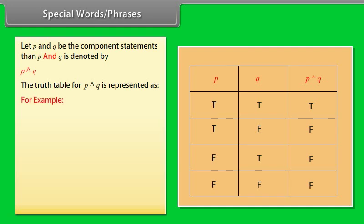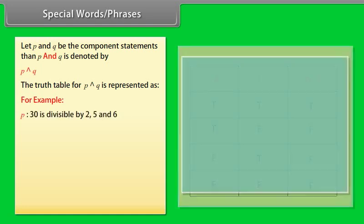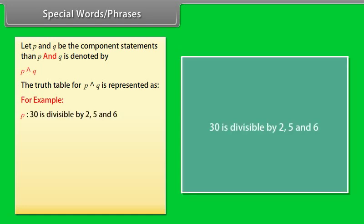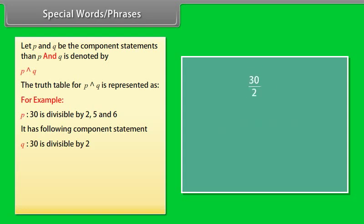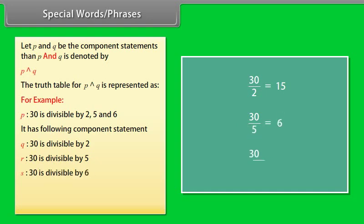For example, P: '30 is divisible by 2, 5 and 6.' Its component statements are Q: '30 is divisible by 2'; R: '30 is divisible by 5'; S: '30 is divisible by 6.' Q, R, and S are all true statements, and therefore P is also a true statement.